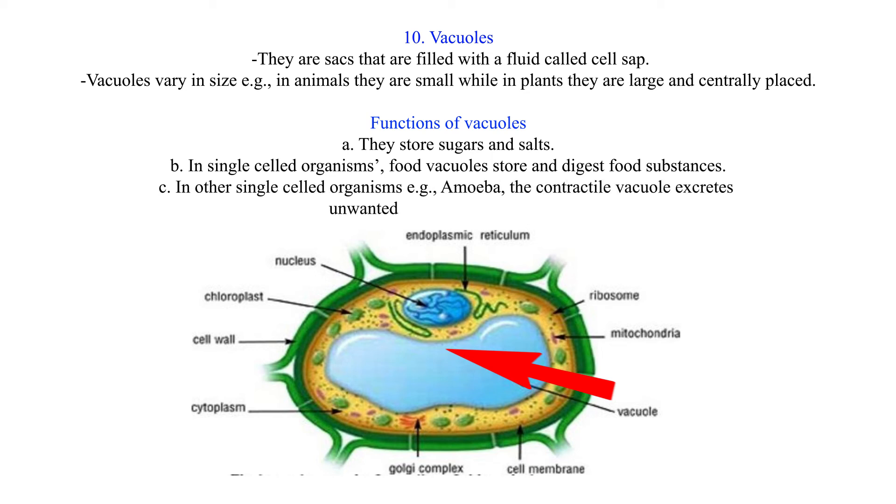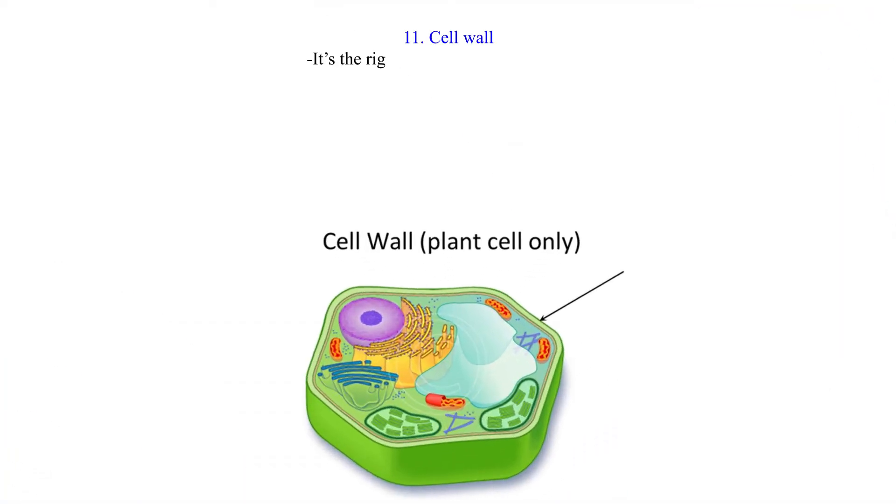In other single-celled organisms, for example amoeba, the contractile vacuole excretes unwanted materials from the cell. 11. Cell wall. It's the rigid outer wall cover of plants. It contains cellulose fibers.